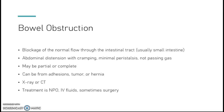Bowel obstruction is a blockage of normal flow through the intestinal tract, usually the small intestine, but it can occur in the large intestine as well. You'll typically see abdominal distension, cramping, minimal peristalsis — meaning things aren't moving — and they're not passing gas. It can be a partial or complete obstruction. Common causes are adhesions, tumor, or hernia. People who've had prior abdominal surgeries are at higher risk. Diagnosis is by X-ray or CT scan. Treatment includes NPO, IV fluids, and pain management. Depending on severity, surgery and/or an NG tube may be needed.